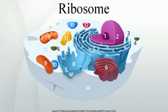Bacterial ribosomes are composed of one or two RNA strands. Eukaryotic ribosomes contain one to three very large RNA molecules and multiple smaller protein molecules. Crystallographic work has shown that there are no ribosomal proteins close to the reaction site for polypeptide synthesis. This proves that the protein components of ribosomes do not directly participate in peptide bond formation catalysis, but rather suggests that these proteins act as a scaffold that may enhance the ability of RNA to synthesize protein.